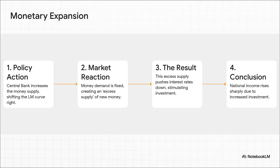The logic here is super clean and direct. People only want to hold a certain amount of cash for their daily needs. So what happens if the central bank suddenly injects a bunch of new money into the system? That extra cash becomes like a hot potato — nobody wants to just sit on it. So they rush to get rid of it by buying other assets, like bonds. All that demand for bonds sends their prices soaring and interest rates plummeting. And lower interest rates kick off a massive wave of investment, and the whole economy gets a huge boost.